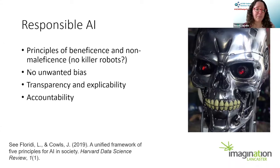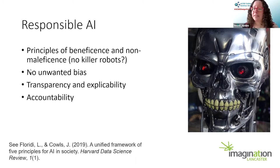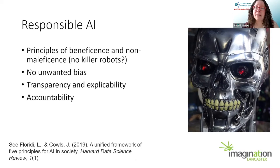There are a lot of people working on what responsible AI means. One example is a framework developed by Floridi and others, which sets out five principles for what a responsible and ethical AI system should look like. The first two are beneficence and non-maleficence — it should benefit society, be generally helpful, and not have negative effects. Really getting to the root of it: we don't want killer robots or things that harm people. Though interestingly there are exceptions — some are developing AI for warfare, and we have to ask whether that's acceptable if it might mean fewer human casualties overall.